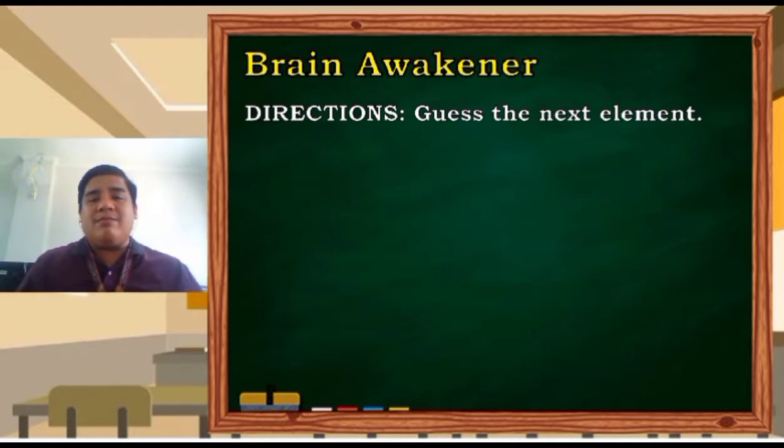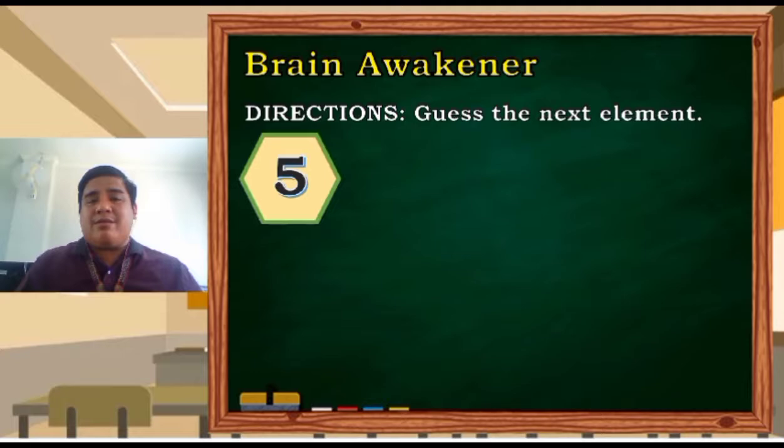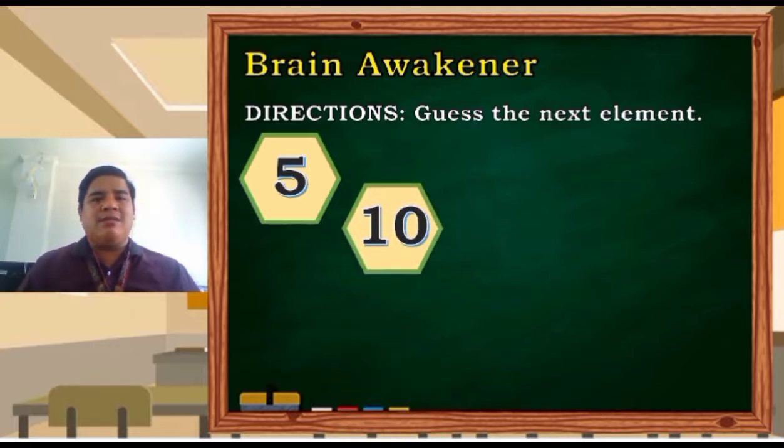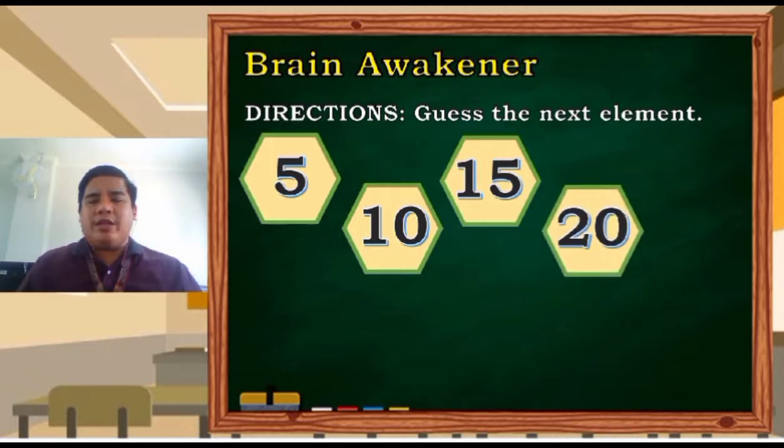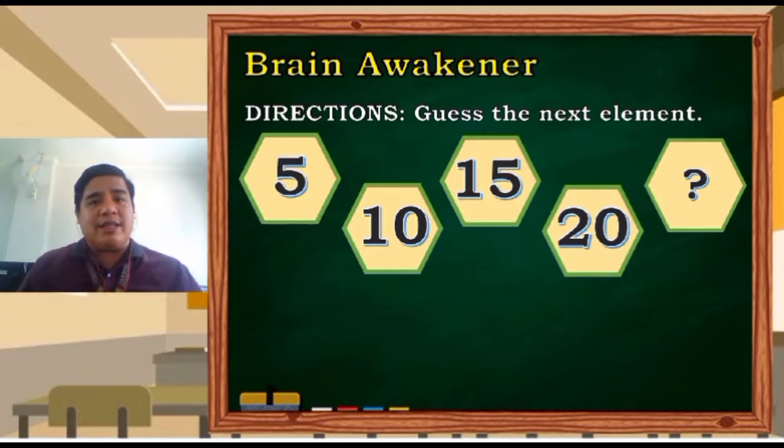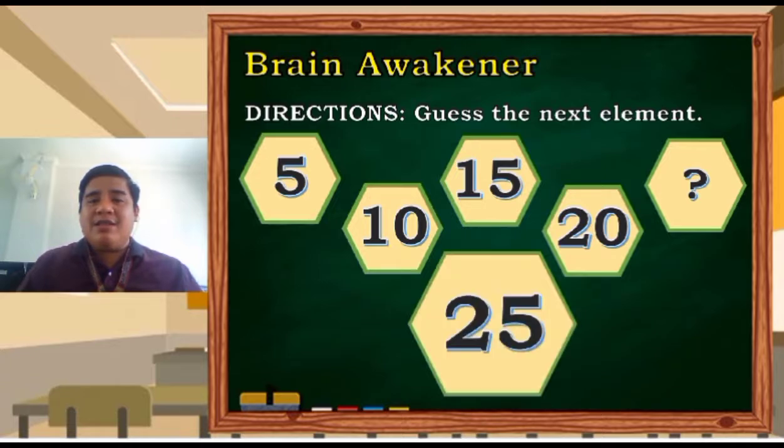What about this one? Numbers 5, 10, 15, 20. What is the next term or what is the next number? We have 25. How did we get 25? So the rule is very easy to determine. We just add 5 from the preceding element.